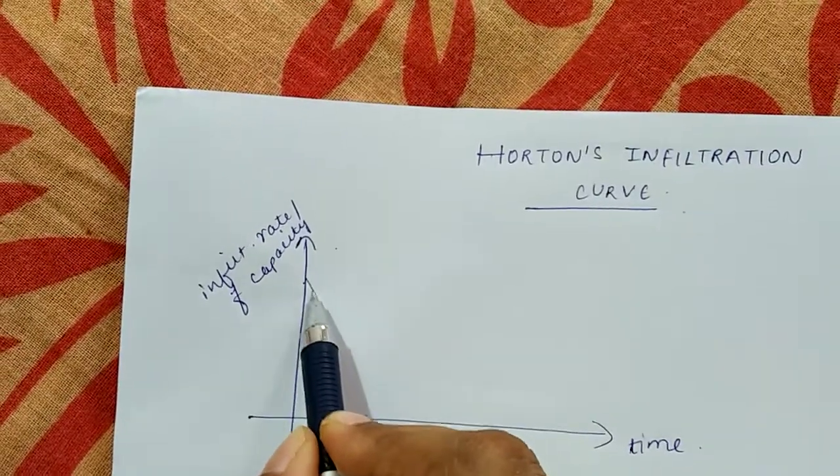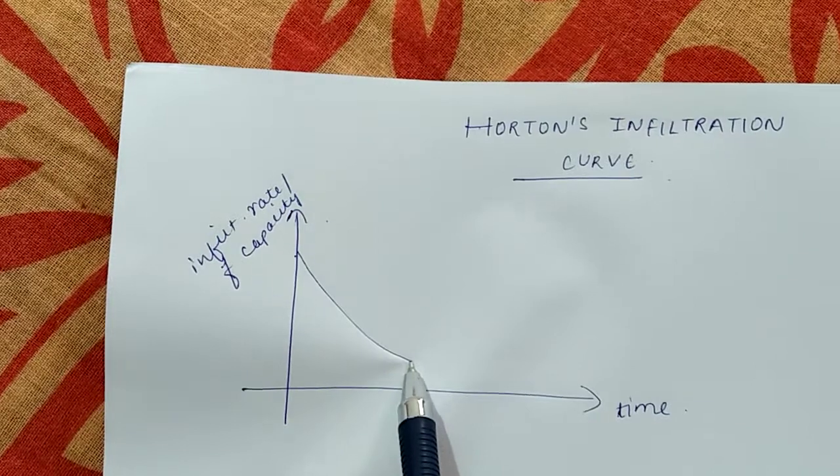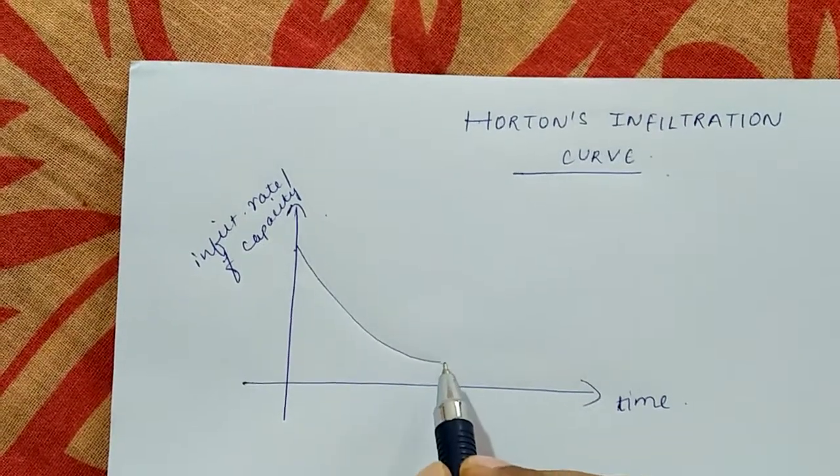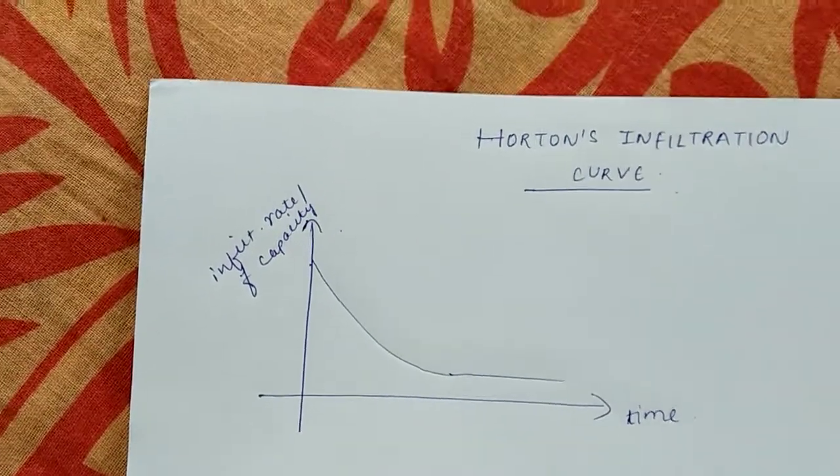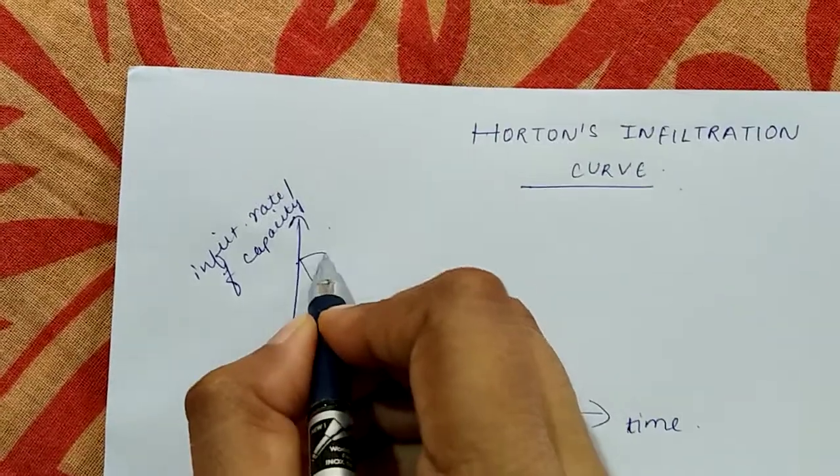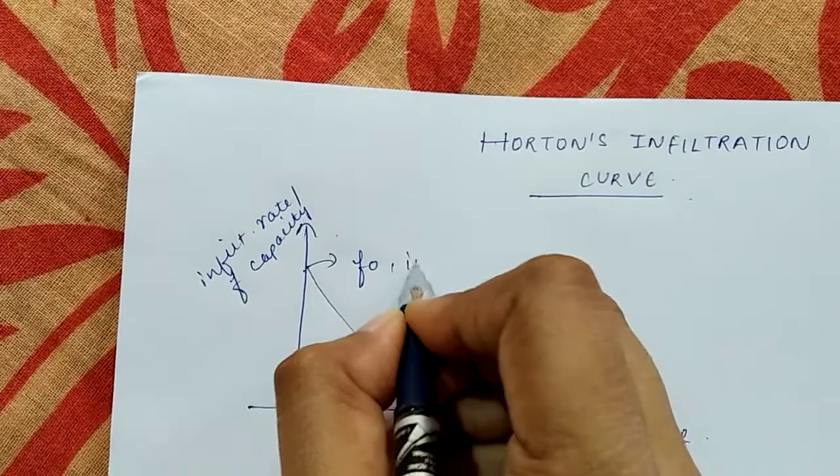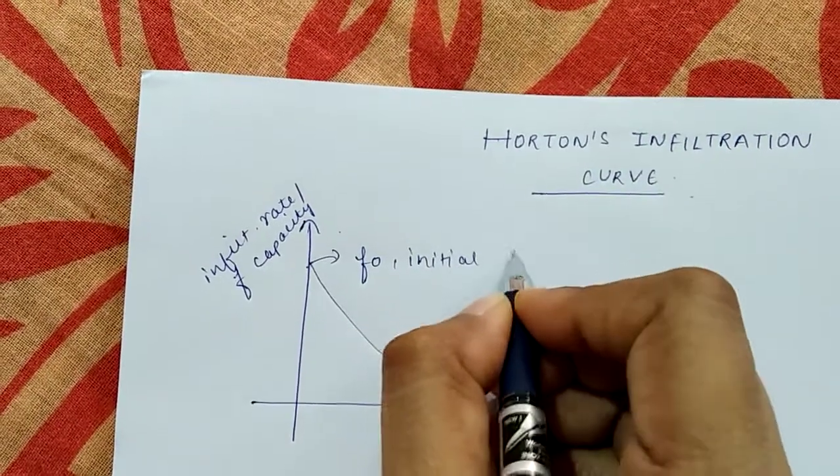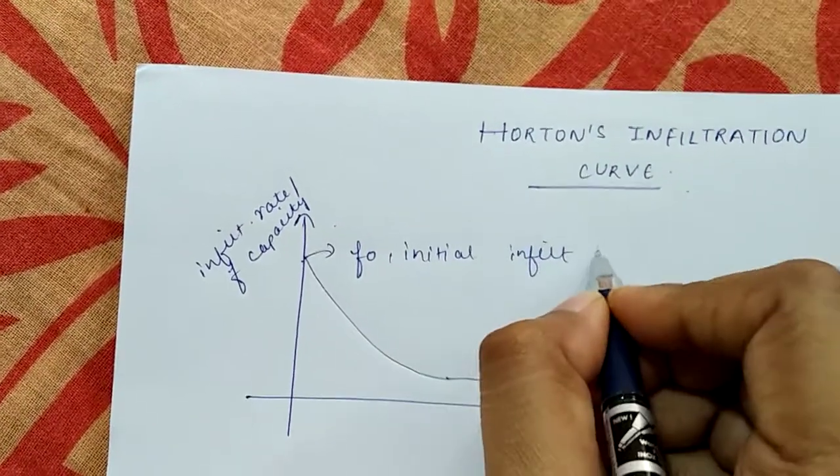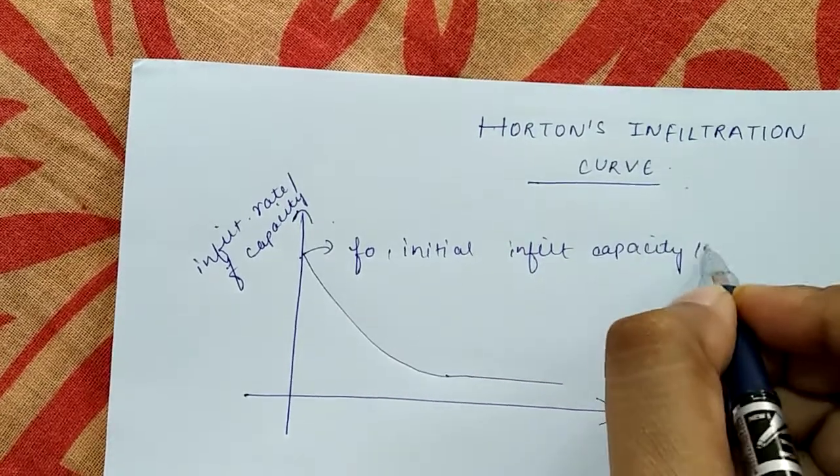Then with time it will achieve, after a very long time, a constant rate. This initial value of infiltration rate is denoted by F0. It is called initial infiltration capacity or rate.